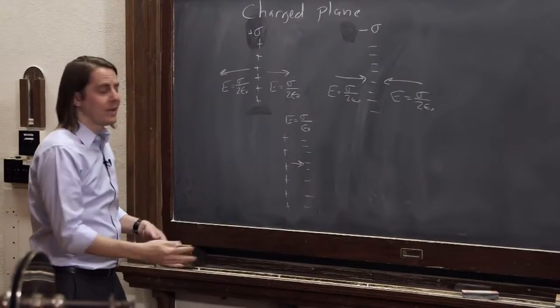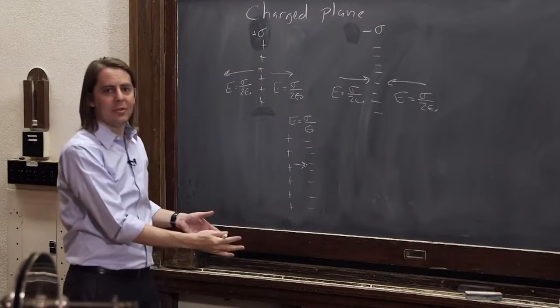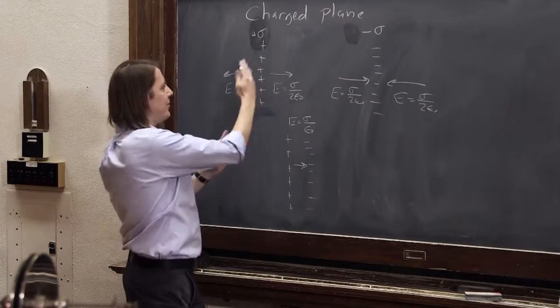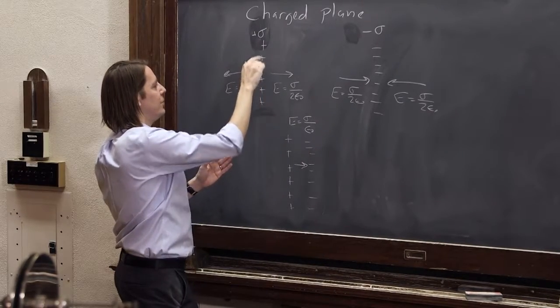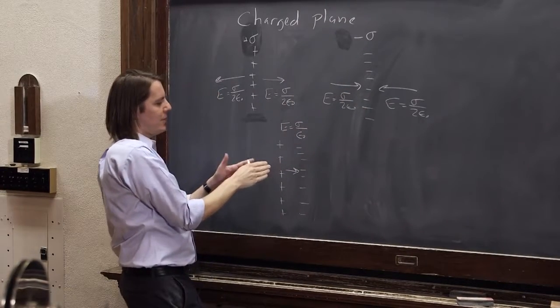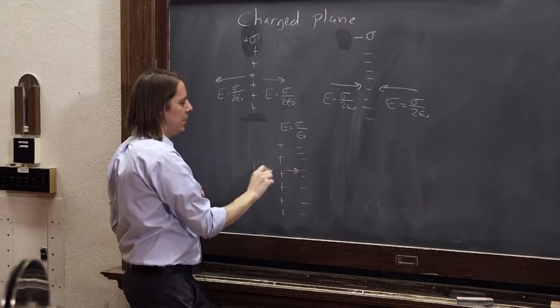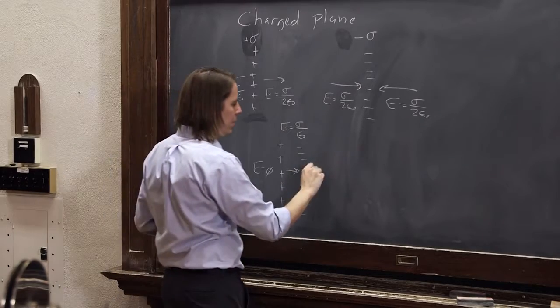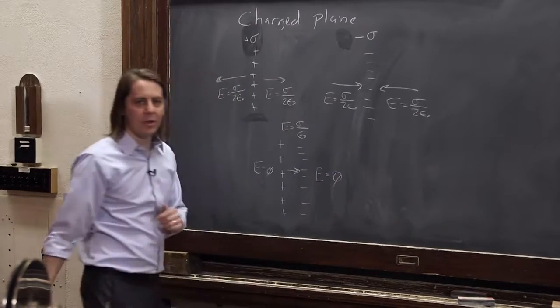And I didn't point it out, but actually the E field outside the capacitor cancels, because to the left of this plane, you have a field due to the positive charges that way, you have a field due to the negative charges that way. So each one of these makes opposing charge out here, E equals zero, and E equals zero on that side also.